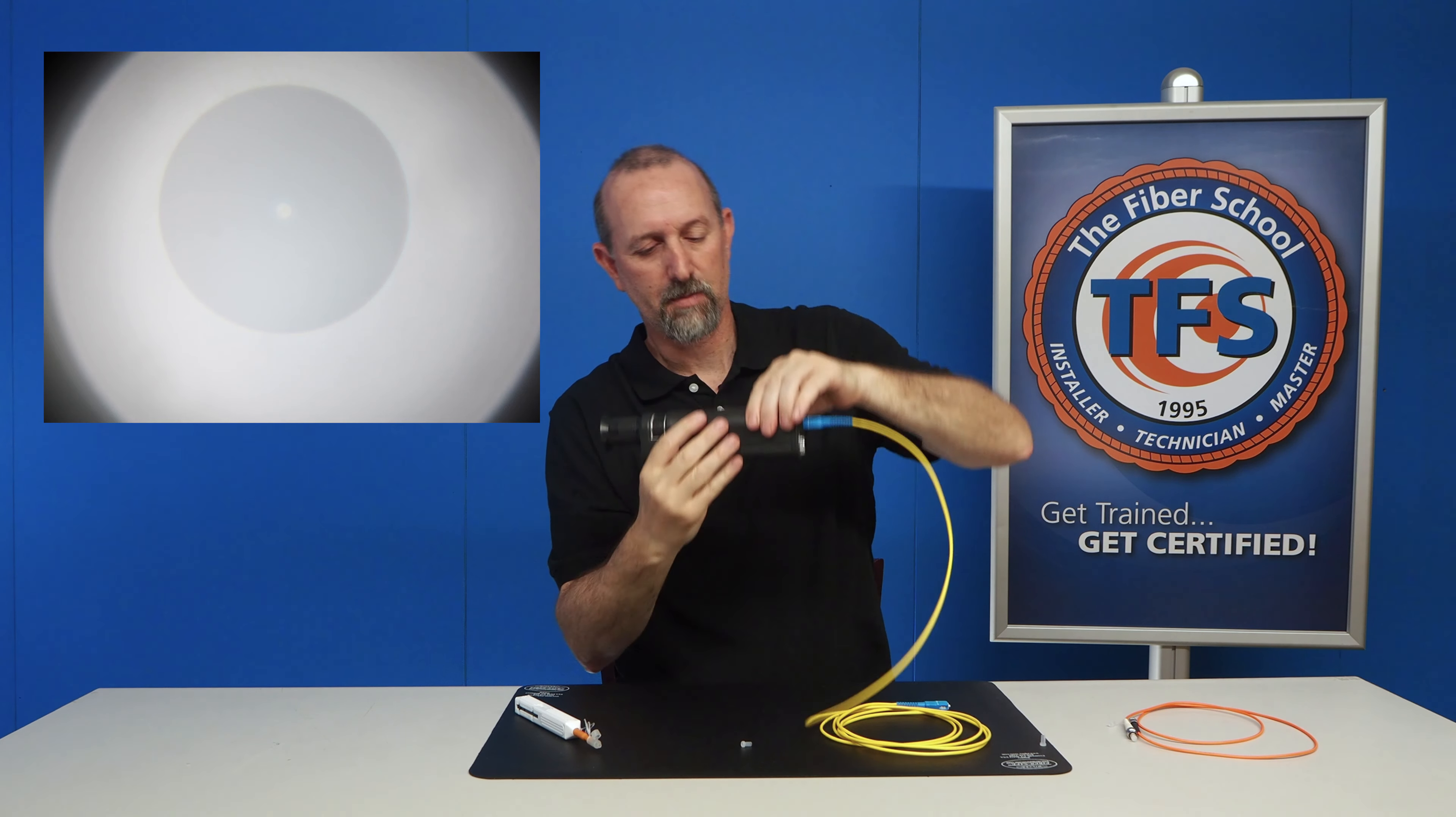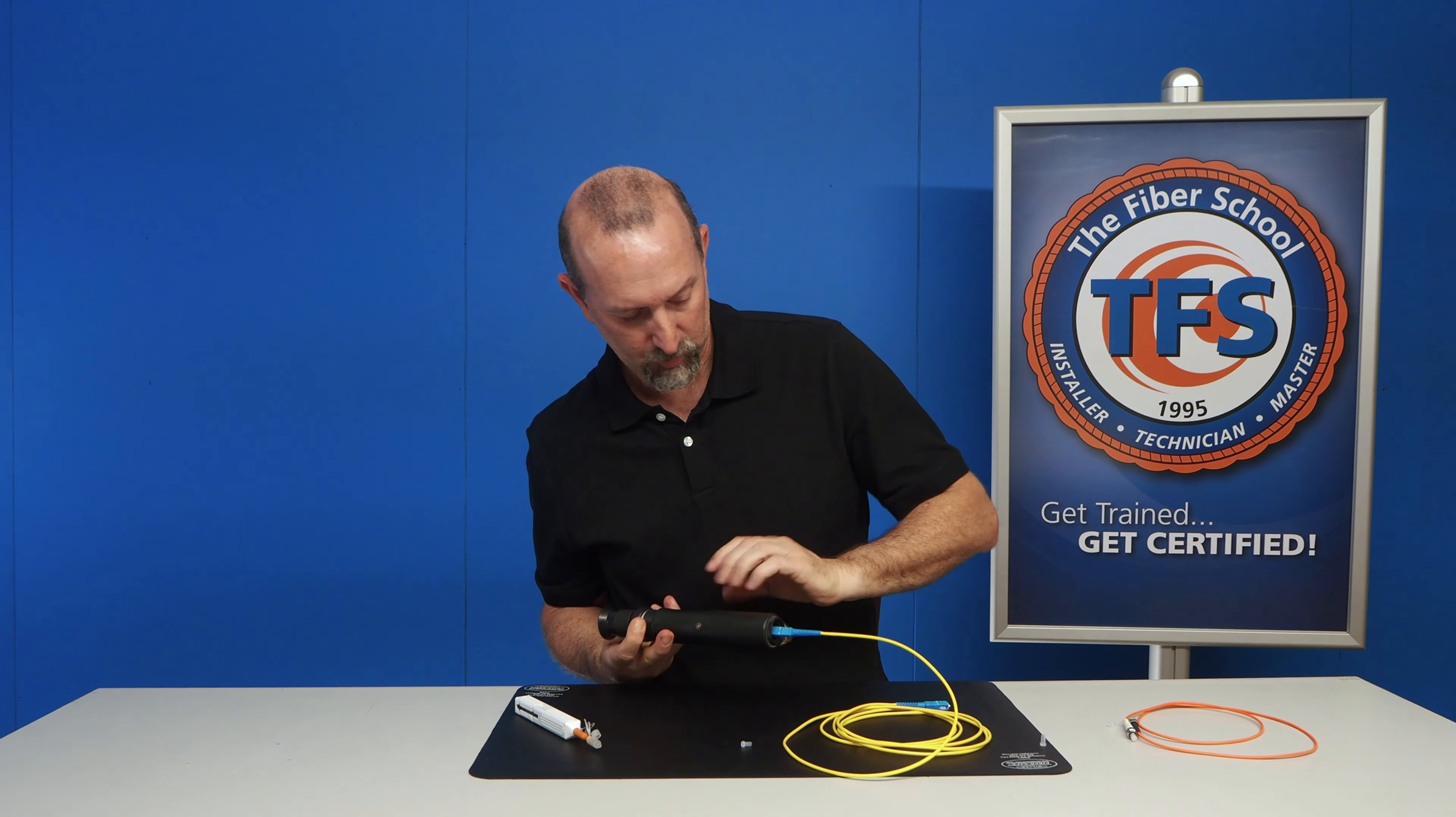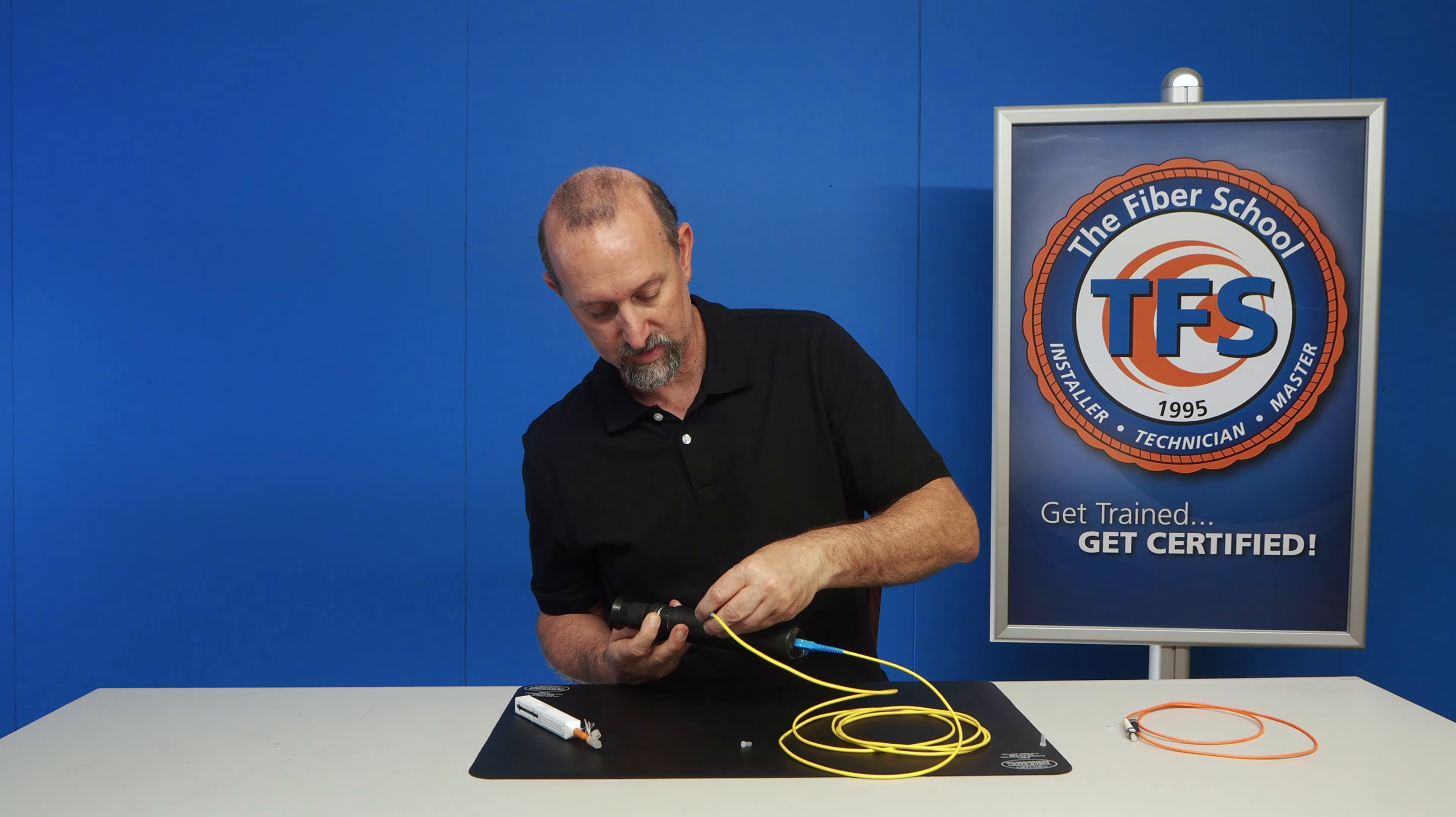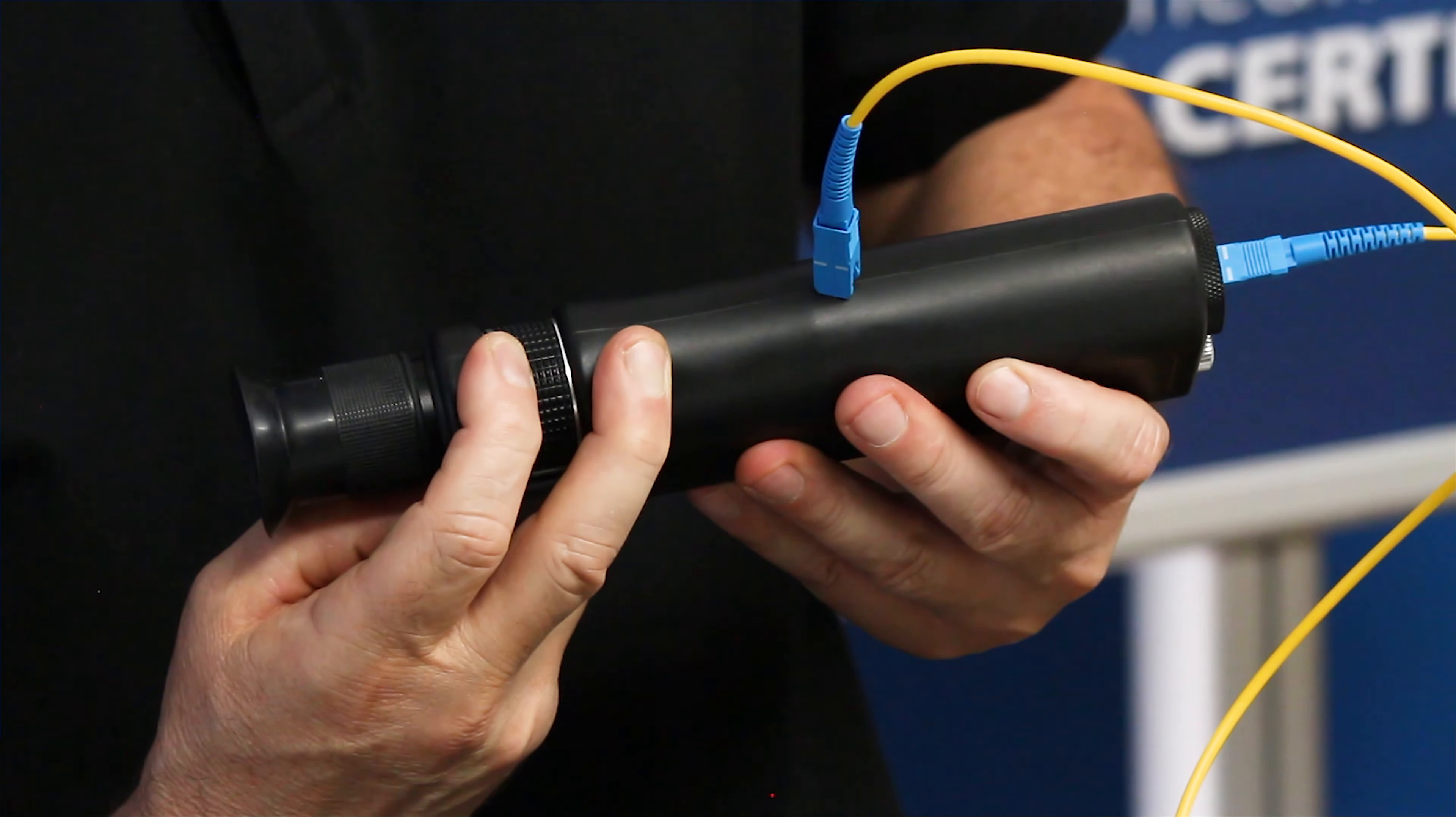Now, this particular model, you can see here, I turn it on and there's a light now that's illuminating from here also. What you can do with this little feature, not all microscopes have these, is you can put the other end of the cable assembly inside, and then when you put it up into the sky, it'll shine a light down the core.